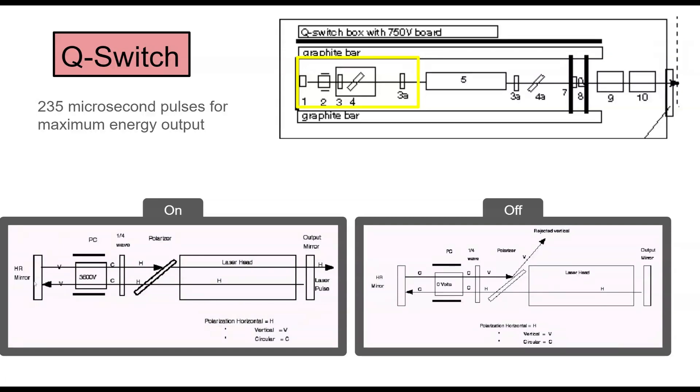It bounces off this highly reflective mirror, goes back through this pocket cell, gets another 45-degree rotation and turns circular. Then it goes back through this quarter wave plate and gets another 45-degree rotation and turns linear. So, as you can see, there's 45 degrees four times. So 180 degrees of rotation just turns it back into horizontal light, and that passes through the polarizer.